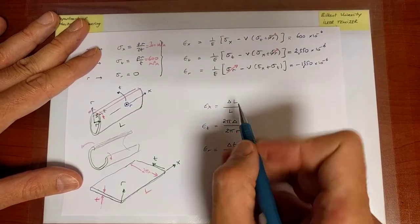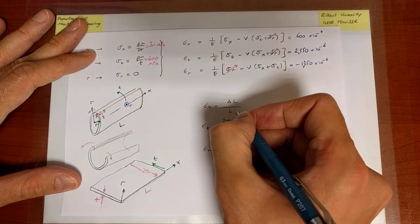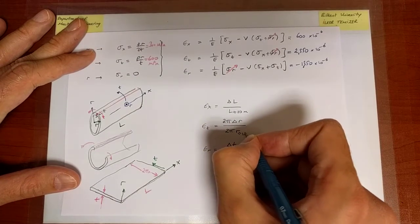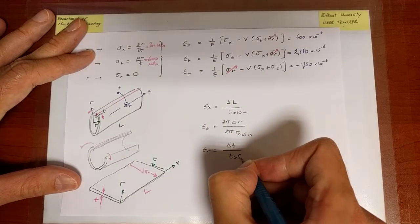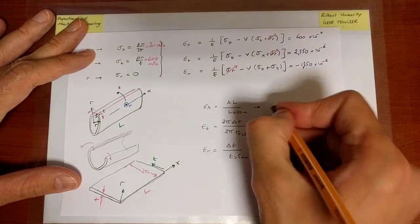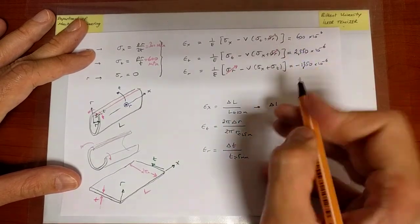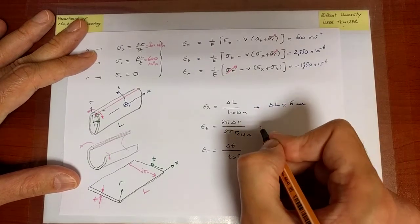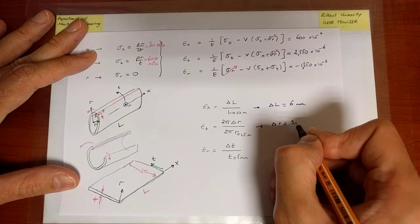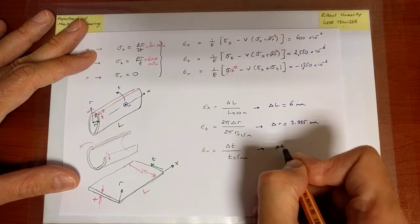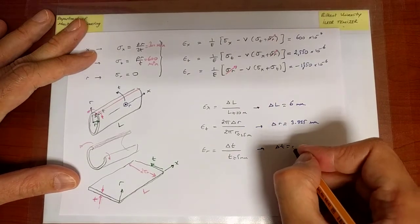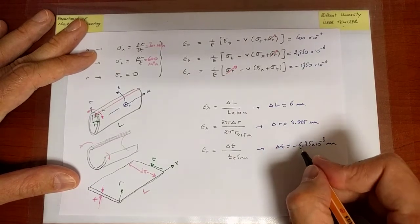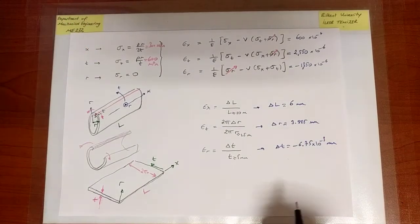I know the initial length, which was equal to 10 meters. I know the value of the radius, which was equal to 1.5 meters. And I know the initial thickness, which was equal to 5 millimeters. Hence you can calculate from these, given the knowledge of the normal strains, that the change in the length is about 6 millimeters, the change in the radius is 3.825 millimeters, and the change in the thickness is equal to -6.75 × 10^-3 millimeters, or -6.75 micrometers.